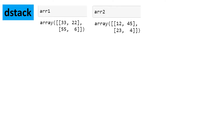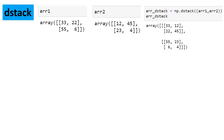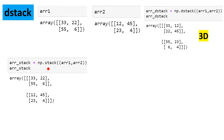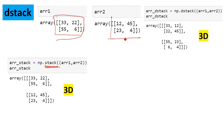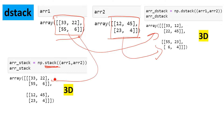The next function is dstack, where 'd' stands for depth stack. When you use dstack it produces the same result as the stack function we tried earlier — both produce a 3D array, even if you combine two 2D arrays. It takes the whole array as-is and puts one below another: the first array goes on top and the second at the bottom.